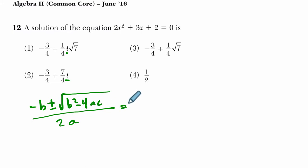And in this case, what do we have? a is 2, b is 3, and c is 2, the constant.